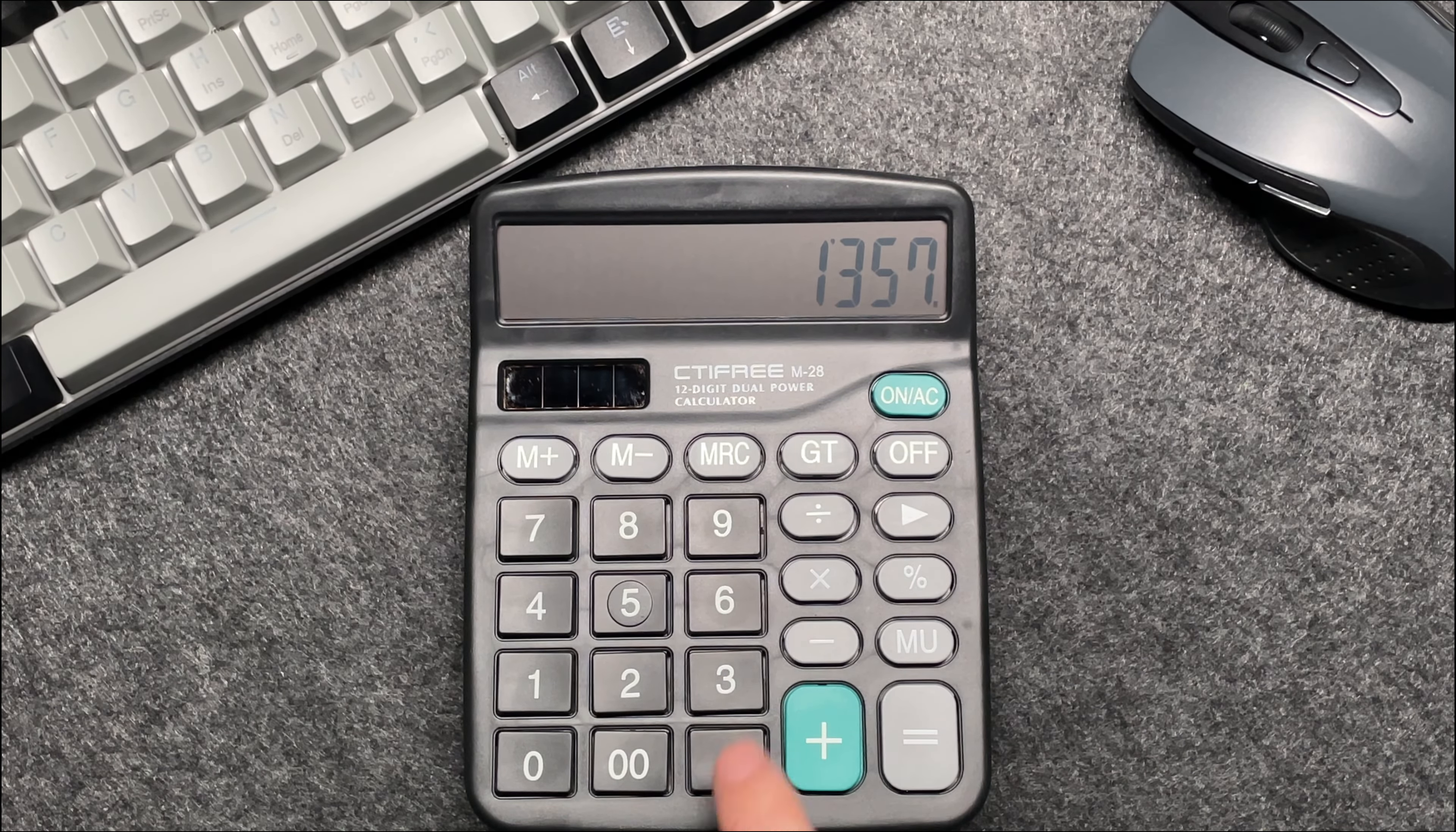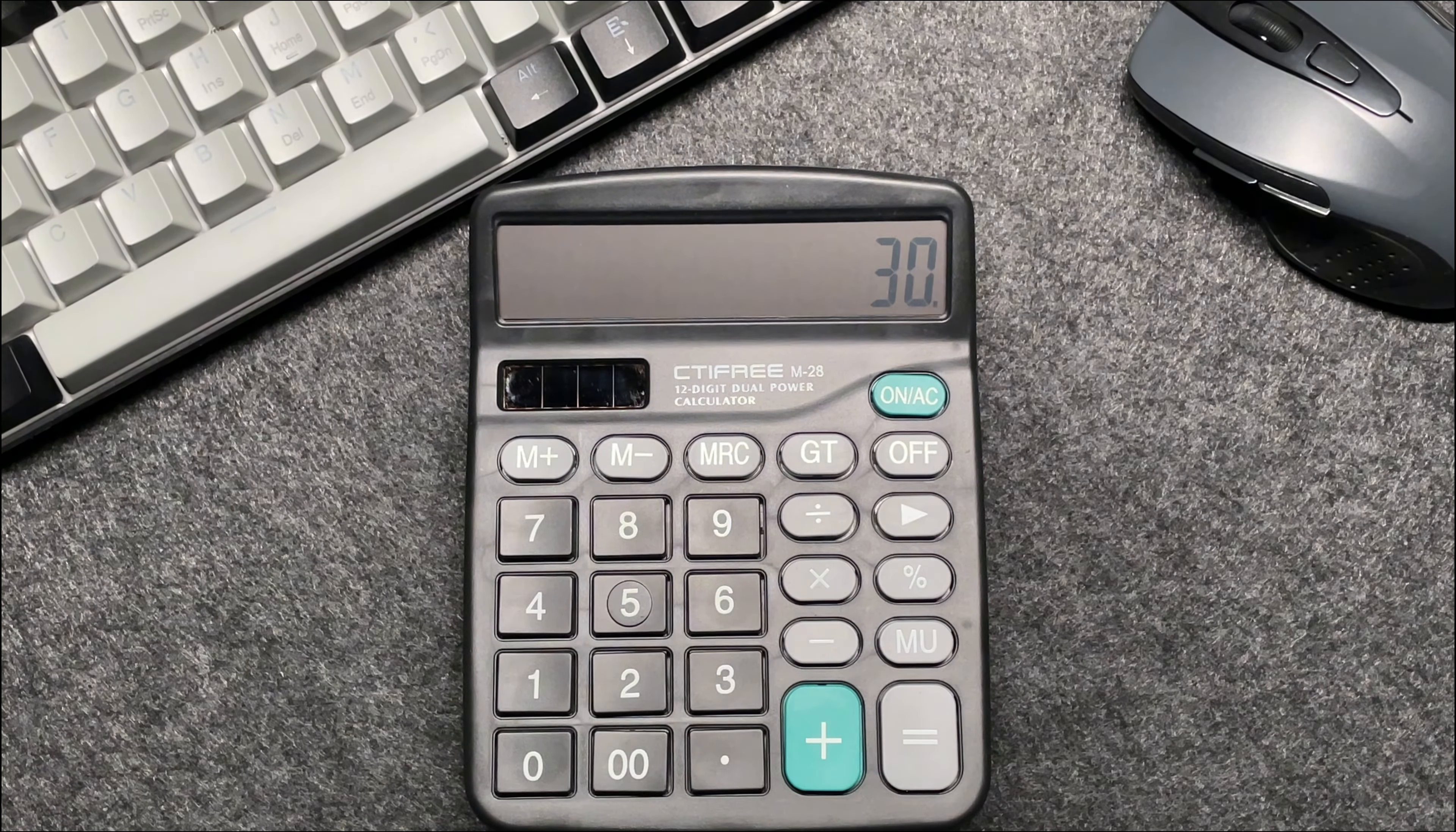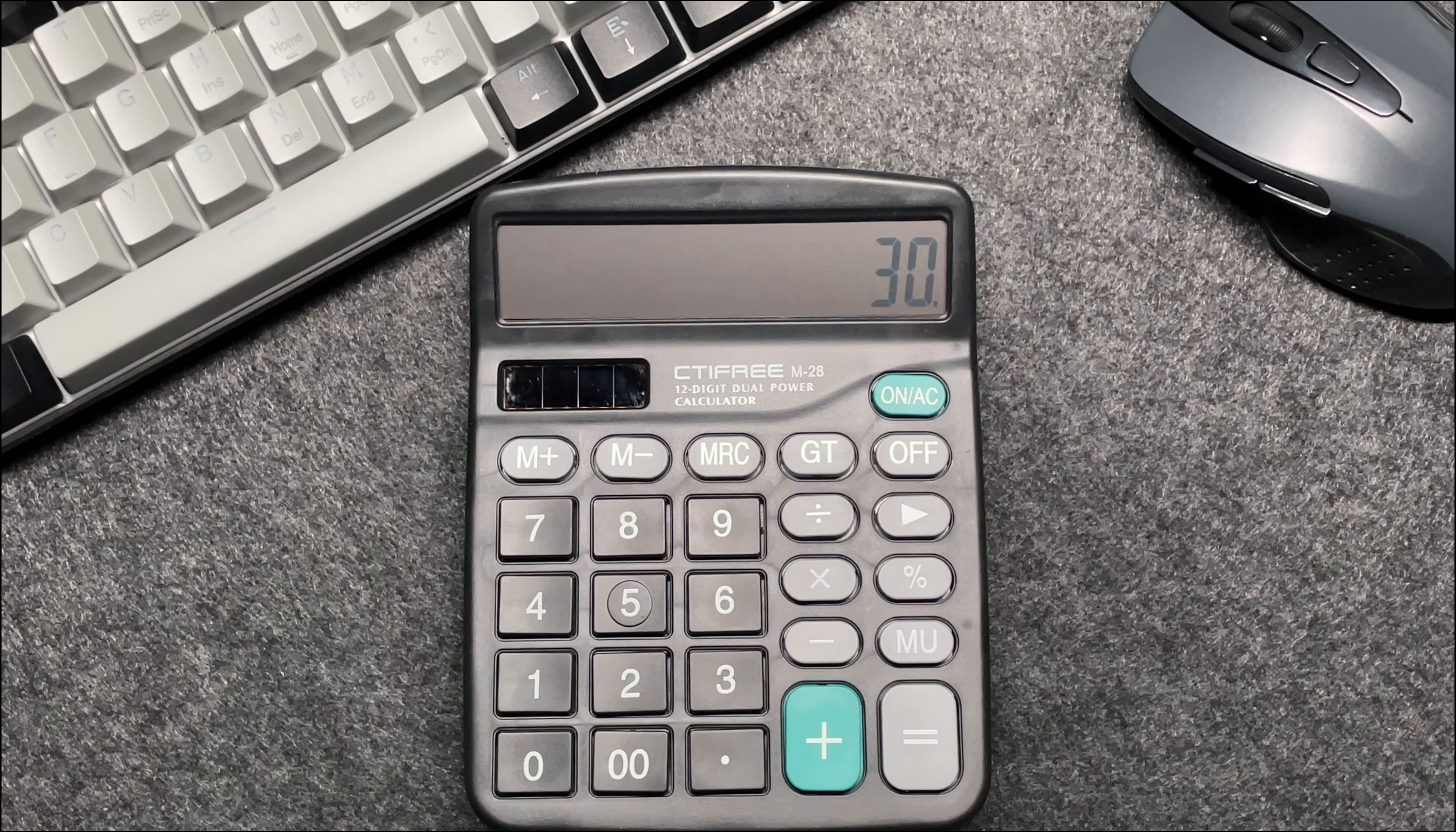your calculator, press the multiply button, and multiply by 30. Now you may be wondering, why do we multiply by